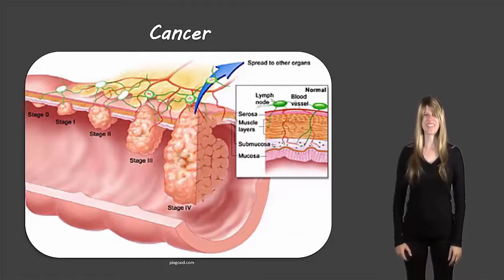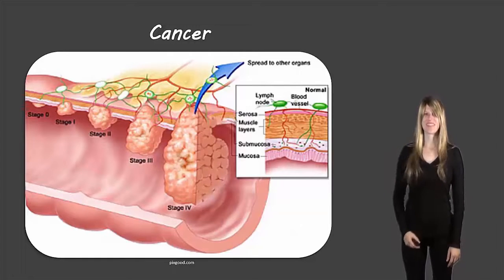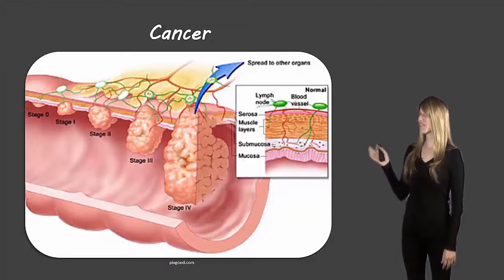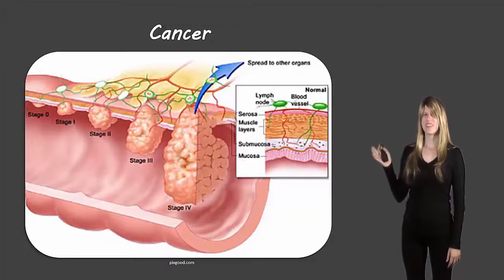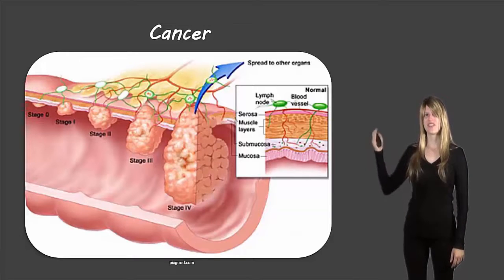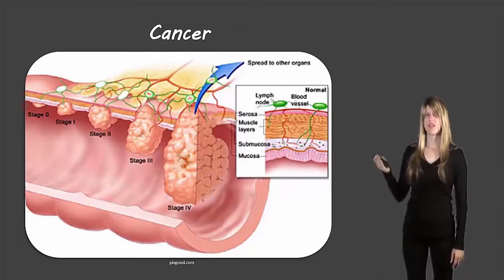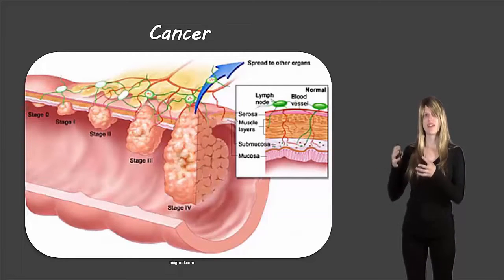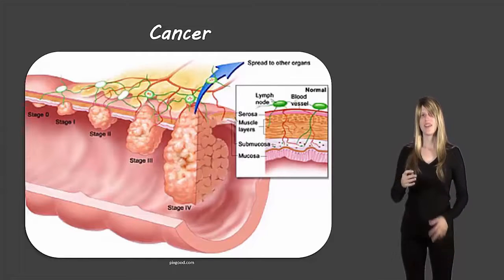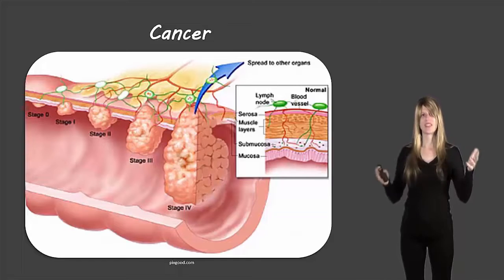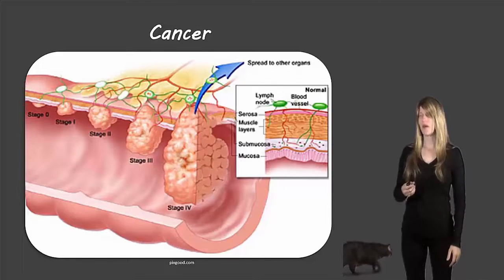Hello students, Ms. Watson here, and today we're going to study the very basics of cancer. I chose this picture here so you can see how cancer progresses through different stages and how it can get progressively worse as it's able to connect to the blood vessels and go to other parts of the body. Obviously this is a negative thing because the cancer can now invade other parts of the body.